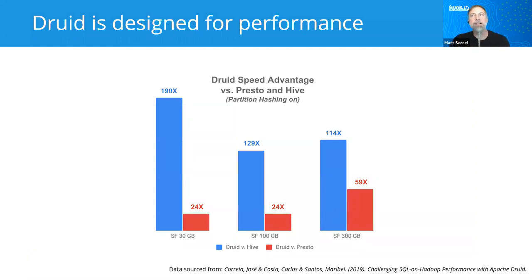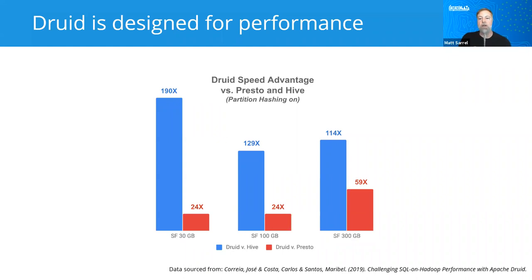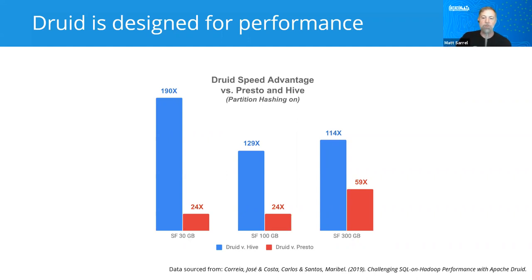As far as Druid's speed goes, Druid is frequently compared to Presto and Hive, as they're both open-source Apache projects as well. As you can see, Druid is much faster than Hive and much faster than Presto. This was done by a third party — someone who had nothing to do with Druid — at a university in Europe. So you can think of it as realistically and responsibly done and believable.